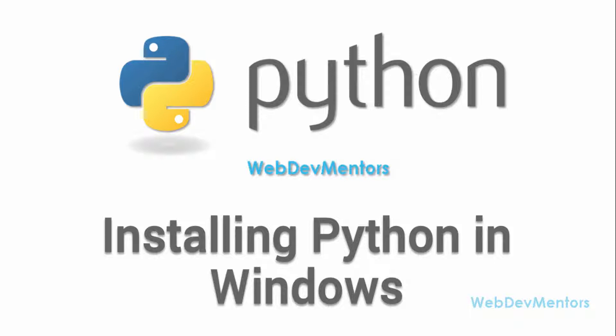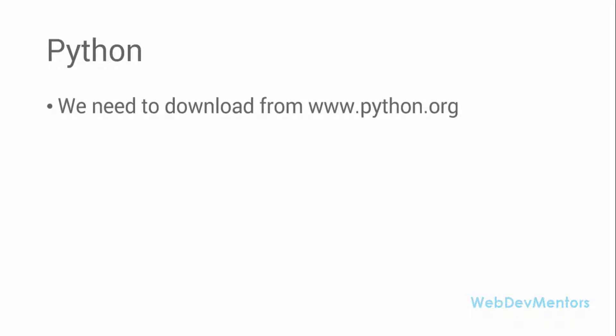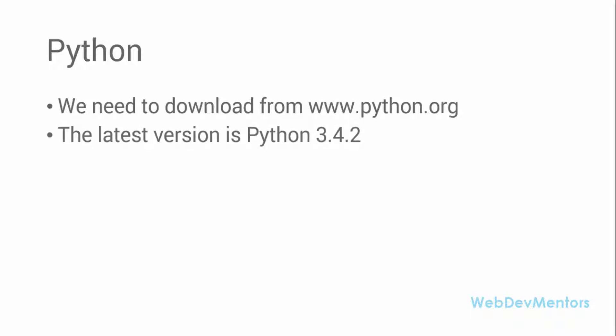The first thing you have to do is download Python from the Python.org website. The latest version available at the time of making this video is Python 3.4.2. When you're watching this video you might see a different latest version, so don't worry about it — just download the latest version available.